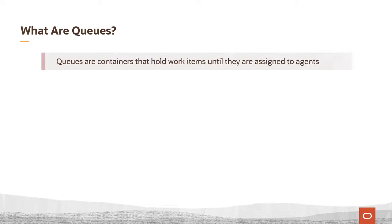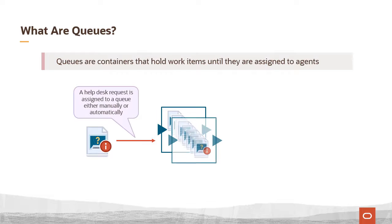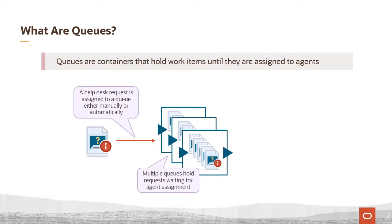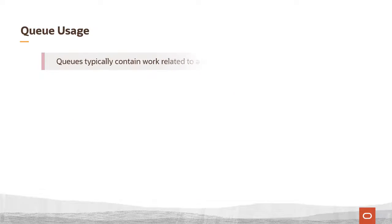Queues are containers that hold work items until they are assigned to agents. A help desk request is assigned to a queue, either manually or automatically. Organizations can create multiple queues that hold requests waiting for agent assignment. Each help desk request is then assigned to an agent. Queues typically contain work related to a particular grouping, such as category, severity, or the role of the employee who filed the request.